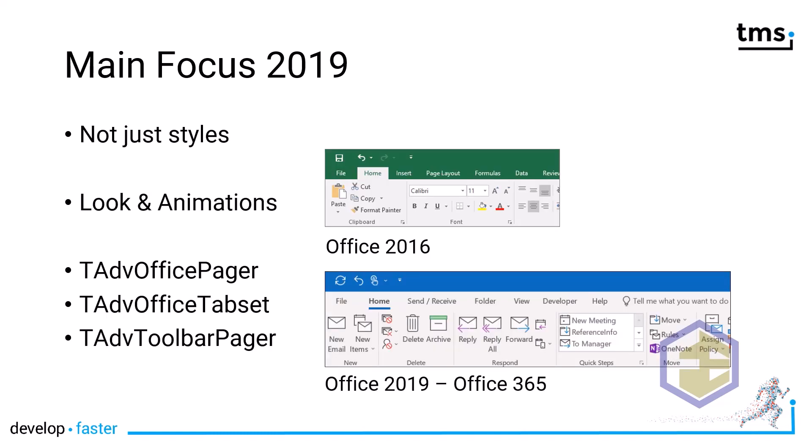Styling for Office 2019 is not just about styling, because everyone who has worked with the new Office products knows the difference. Look at the top: the Office 2016 representation of the ribbon has clear tabs. In Office 2019 and Office 365, those tabs have become simple text lines with an underline when enabled. What makes things even more interesting is that there is an animation when you switch between tabs, and as you'll see in the demonstration, all of this has been fully implemented by TMS.